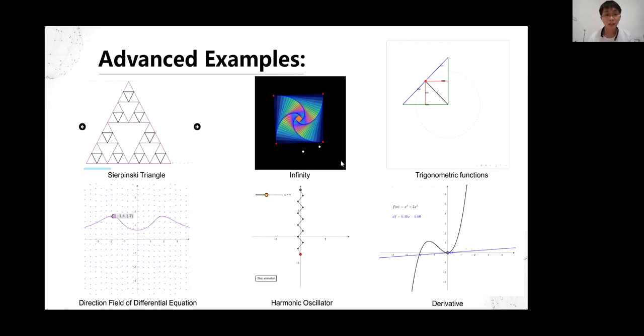And here are some more advanced examples of JSXGraph. Tornado field. Sierpinsky triangle. Infinity. Trigonometric functions. Direction field of differential equations. And harmonic oscillator, where the right point will move up and down here. And derivative functions. And you can change it dynamically.